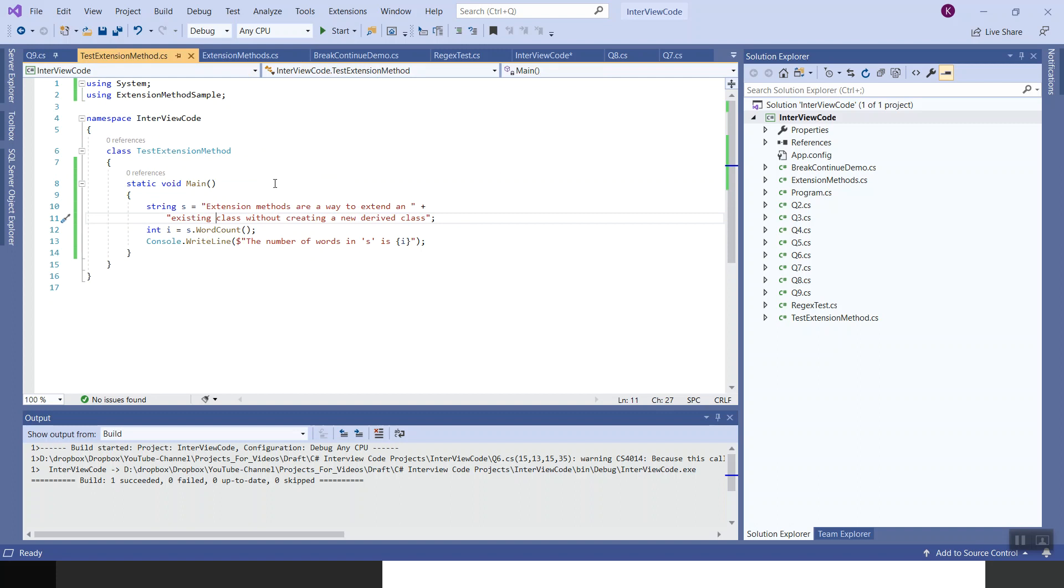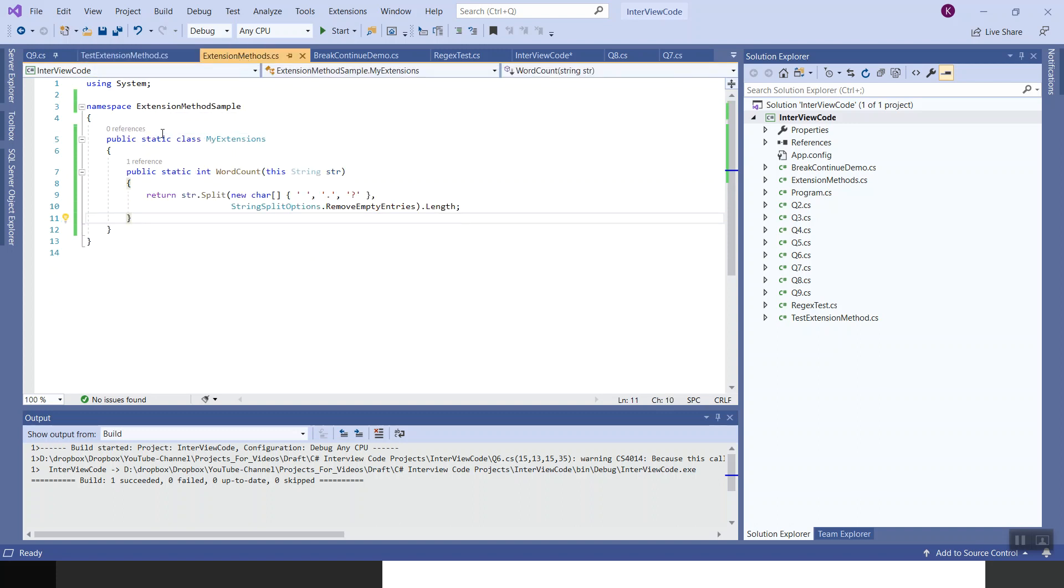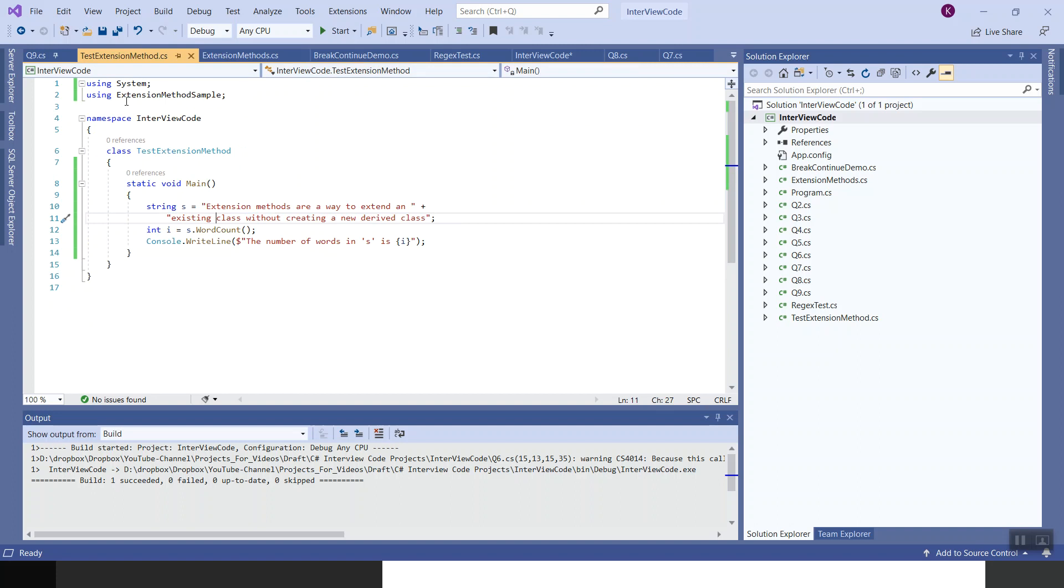How do I test it? In the test extension method, I will bring in this namespace extension method sample. Using extension method sample. Then I will test it in a static void main driver method. String s, this is the test string: 'Extension methods are a way to extend an existing class without creating a new derived class.' And int i equals string dot word count. This is the extension method. You can see there. The number of words in s is, let's see it in action. Ctrl F5 to run this application.